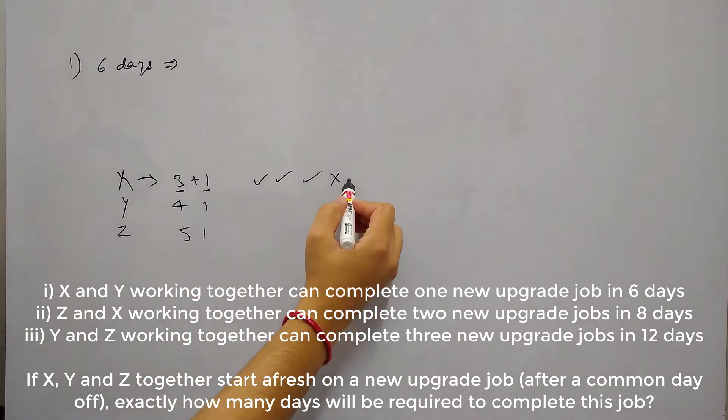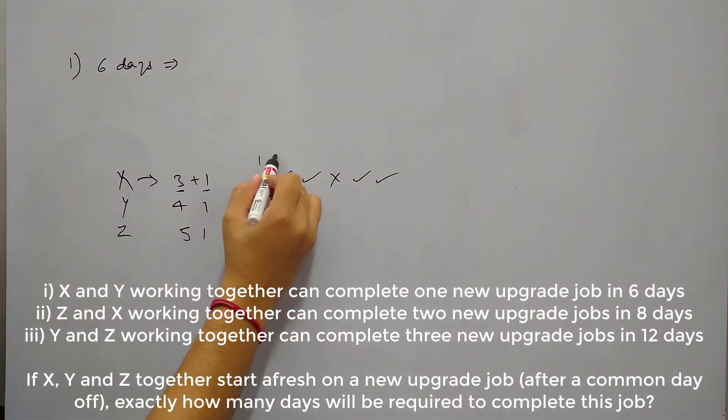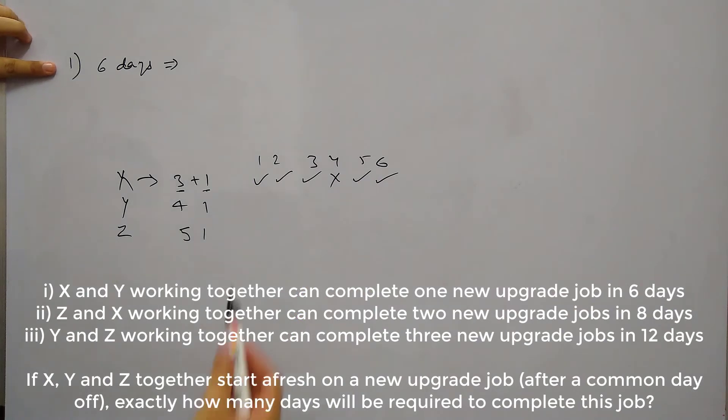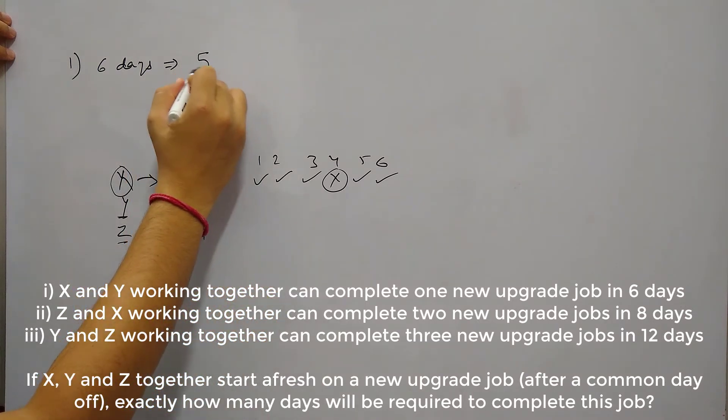The 4th day is off for X. Then again he will work for 2 days. So 1, 2, 3, 4, 5, 6. So according to statement 1 if they worked for 6 days then out of the 6 days X worked only for 5 days. And 1 day was his leave day. And if we consider their working efficiency is X unit per day, for Y it's Y unit per day and for Z it's Z unit per day. Then according to first statement X worked for 5 days. So 5 into X.